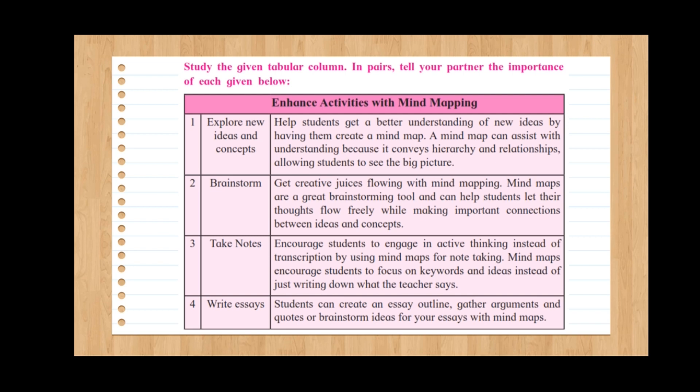Now we'll look at the tabular column given in your text, which asks you to tell your partner the importance of each item and enhance the activities with mind mapping. First: Explore New Ideas and Concepts — mind maps help students get a better understanding of new ideas by having them create a mind map, which conveys hierarchy and relationships, allowing students to see the big picture. Next is Brainstorming — generally used even in lower-level classes. Mind maps are a great brainstorming tool and help students let their thoughts flow freely while making important connections between ideas and concepts.